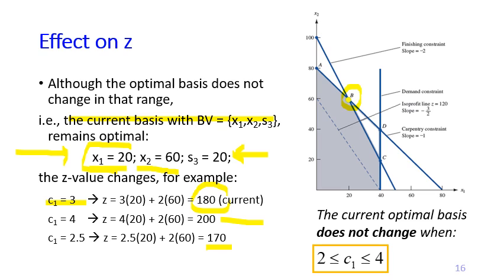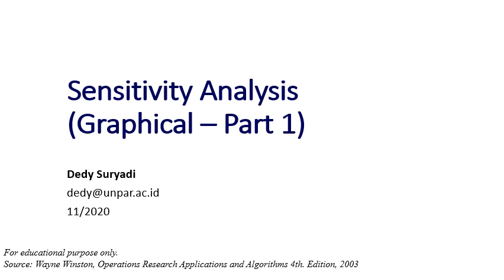We've seen graphically how a change in the price of the soldier may change the current optimal basis. The answer to what value of the soldier price keeps the current basis optimal is between 2 dollars and 4 dollars, inclusive. That's the end of the first part. In the next one, we're going to look at the effect of changing the value of the right-hand side of the constraints.